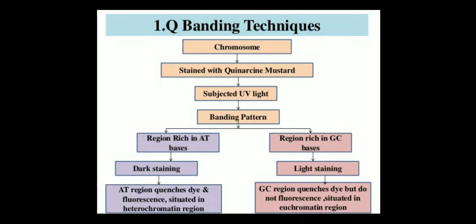The dye is taken up by adenine and thymine, which are situated in the heterochromatin region where the chromosome is most condensed, making it appear darker. In the GC rich region, the chromosome appears euchromatic — not completely condensed — and DNA binding proteins occupy this region. Therefore it is not highly condensed, it is lightly stained, and the dye does not fluoresce in the euchromatin region. The AT rich darkly stained region shows dark fluorescence under UV light.